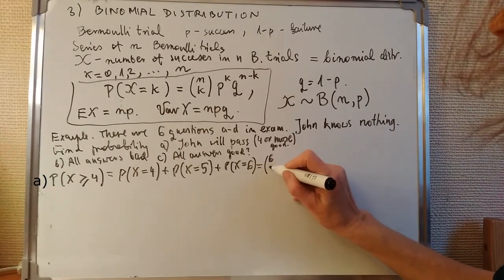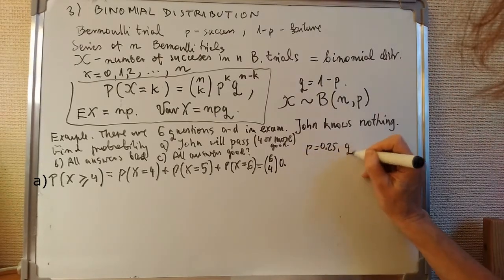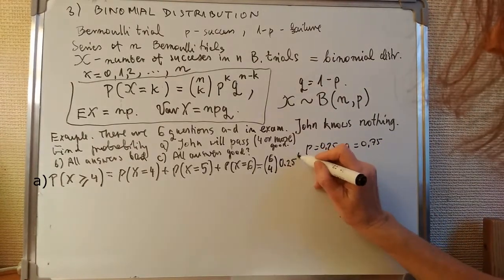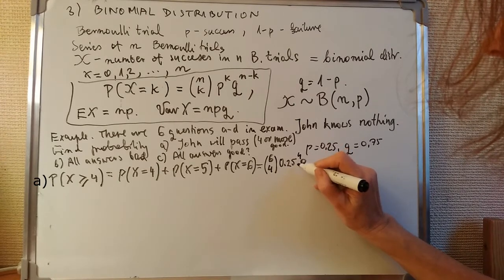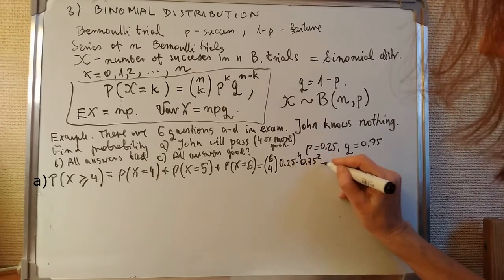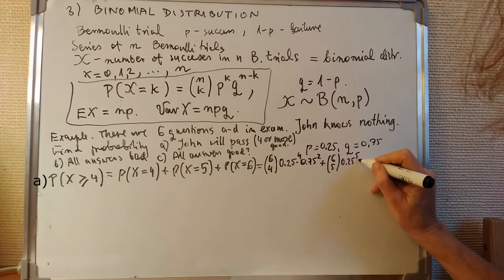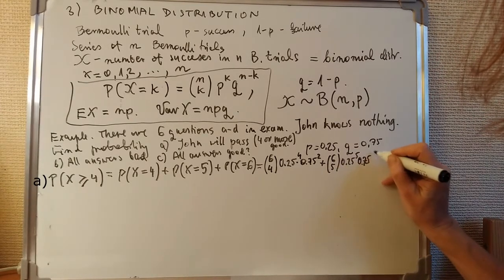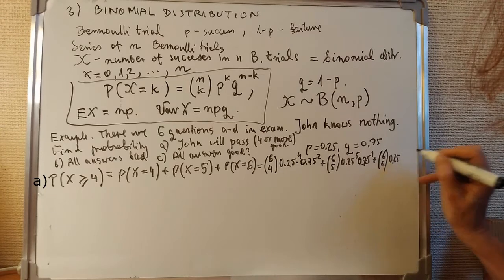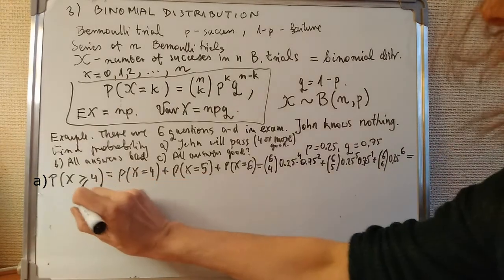So this is: 6 choose 4, times 0.25 to the power 4, times 0.75 to the power 2; plus 6 choose 5, times 0.25 to the power 5, times 0.75 to the power 1; plus 6 choose 6, times 0.25 to the power 6 — and the remaining term is zero so it doesn't appear at all.